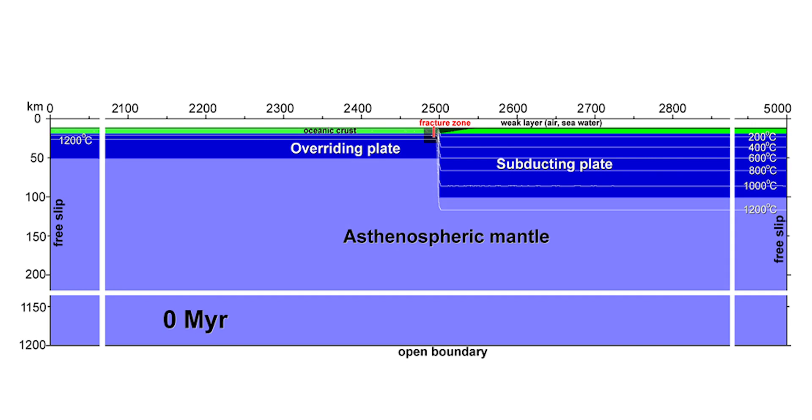Thick, old lithosphere lies to the right of the fracture zone. Because it has a thick mantle root, it is slightly denser than the underlying asthenosphere. This lithosphere is gravitationally unstable and should sink, but its strength makes sinking difficult.